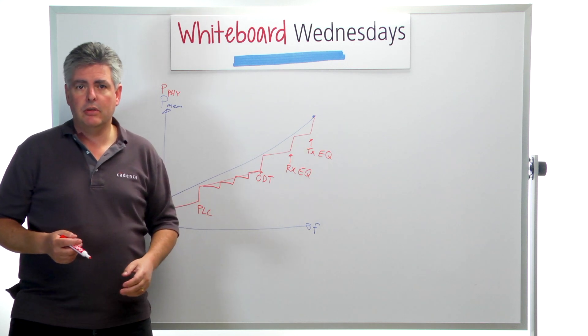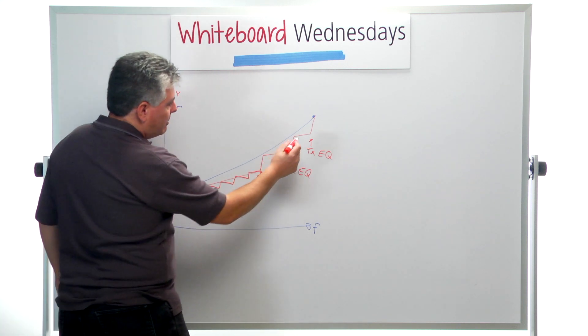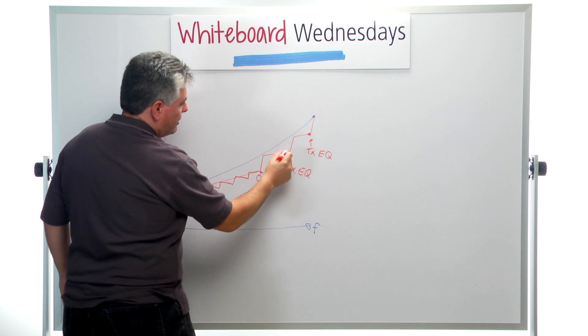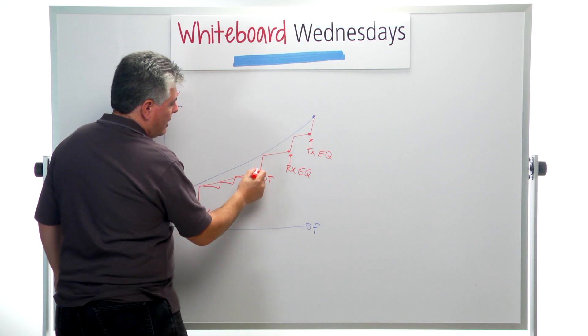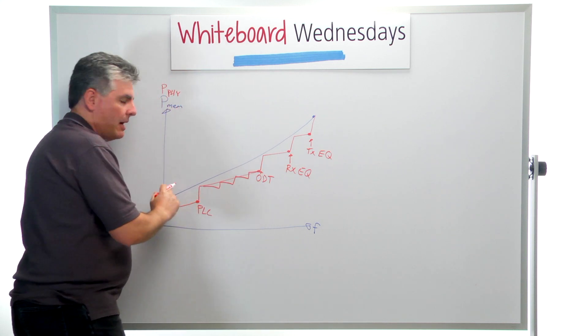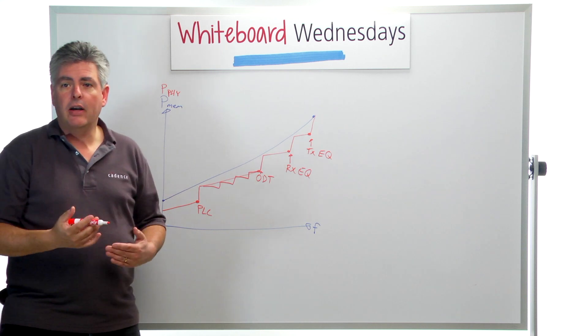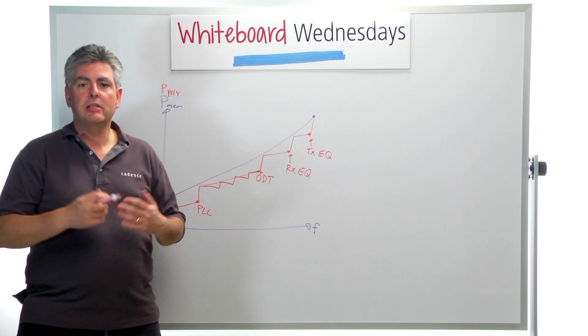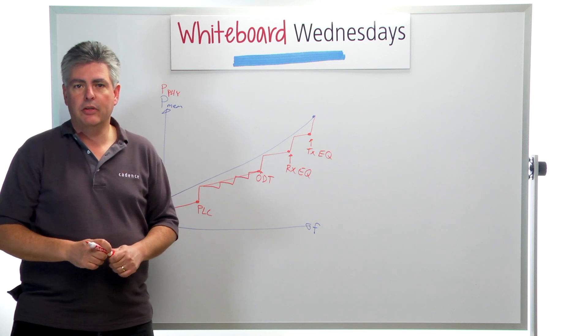you're probably going to want to try and find one of these points where you're just able to turn off whatever feature it was and try to run up to that point and no higher. And that's probably one of the points where you'll find the least total system power for the workload that you have.